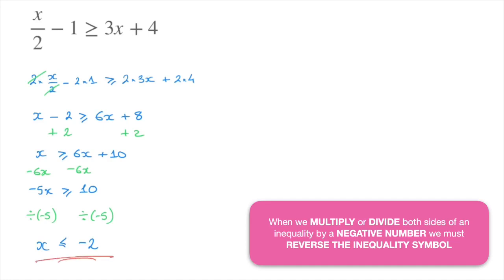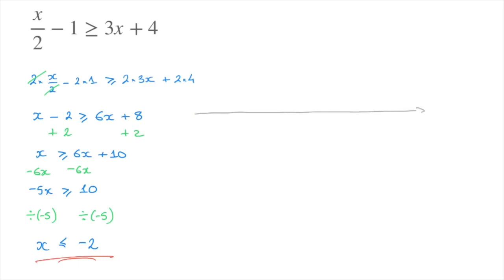And that's the final answer. As always, we can illustrate this on a number line. To illustrate x less than or equal to negative 2, I place a dot above negative 2 — and in this case I fill the dot in. I then draw an arrow leaving that dot and pointing towards all the numbers less than negative 2. The dot is filled in to highlight the fact that x can be equal to negative 2. And that's it for this tutorial.